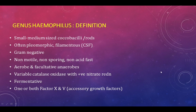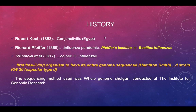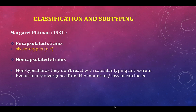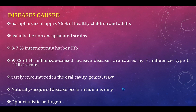H. influenzae was first described by Robert Koch. It was the first free-living organism to have its entire genome sequenced. There are six encapsulated serotypes (a through f) and also non-capsulated strains. Non-capsulated strains cannot be typed because subtyping is done based on the capsule — they do not react with capsular typing antiserum.